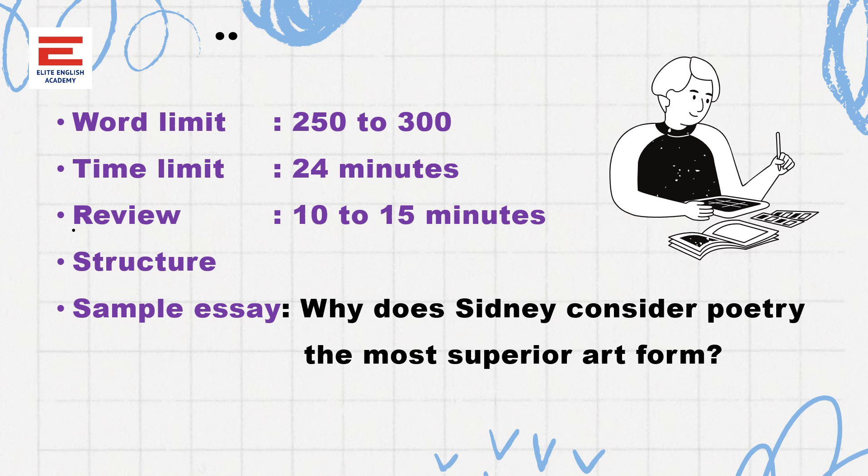Regarding structure, as discussed in a previous video about Chaucer, let me now take a topic from criticism. This question was asked in a NET examination before 2012: 'Why does Sidney consider poetry the most superior art form?' Sidney is known for 'Apology for Poetry,' which is the work where he discusses these things. However, the question requires more than just writing about 'Apology for Poetry' — that is the beauty of this question.